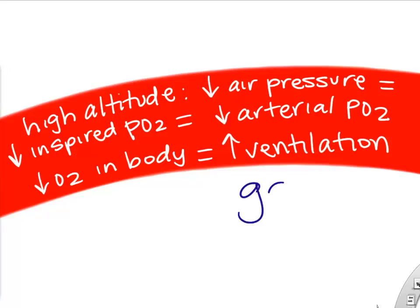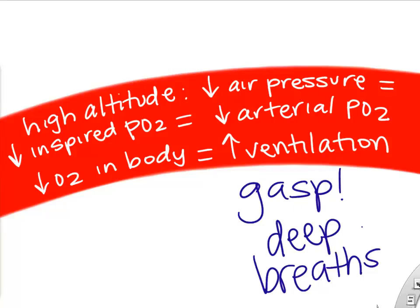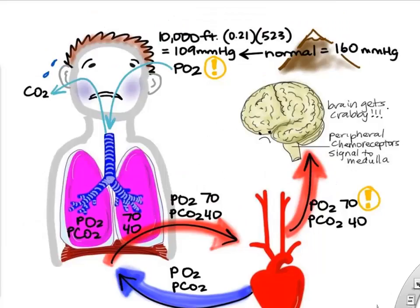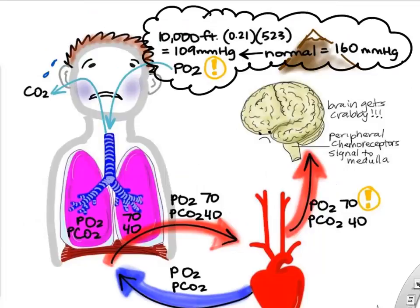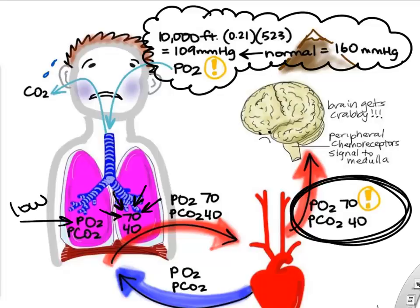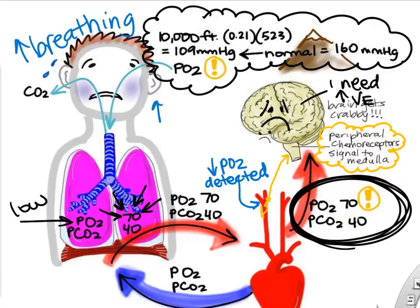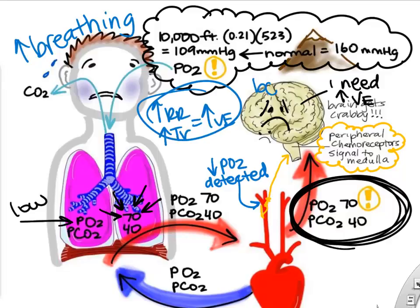Low PO2 at high altitude stimulates ventilation so that you breathe harder and faster. If you climb a mountain around 10,000 feet in Arizona or California, the inspired PO2 is still lower at about 109. Once that gets into your lungs, the PO2 is about 70. Now the arterial PO2 is lower, and the carotid peripheral chemoreceptors in the carotid arteries will send that information about your low oxygen back to your medulla, which stimulates increased ventilation — increasing tidal volume and respiratory rate during both rest and exercise. Hopefully that increased ventilation or hyperventilation will bring your PO2 back up towards normal.